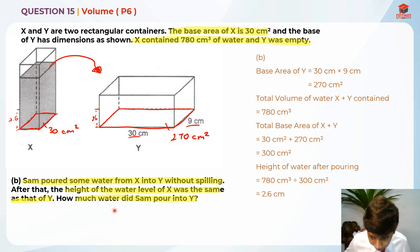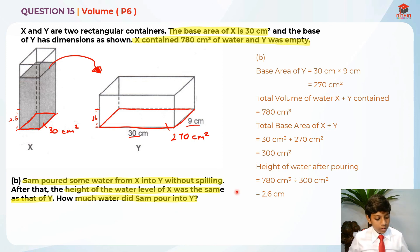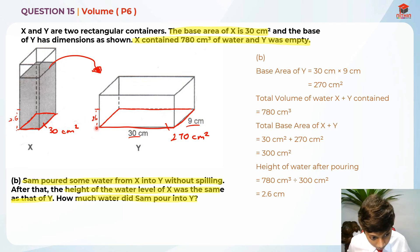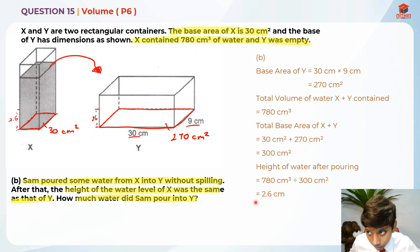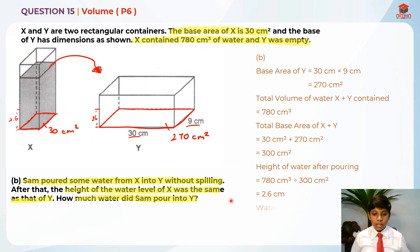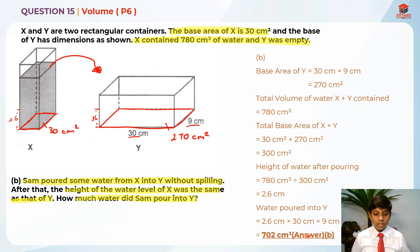To find the amount of water Sam poured into Y, we find the volume of Y using the height we found. Since Y was empty at the start, we take 2.6 cm times 30 cm times 9 cm, which gives 702 cm³. So Sam poured 702 cm³ of water into Y. This is the answer for Part B.